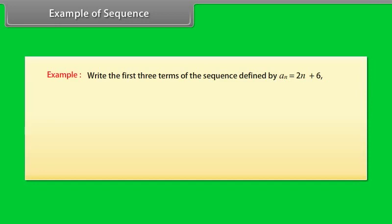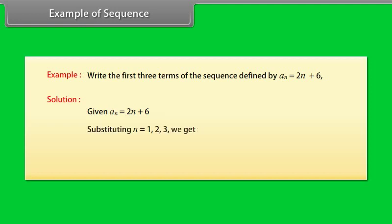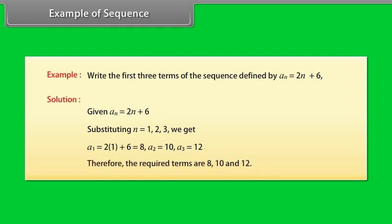Example of sequence: Write the first three terms of the sequence defined by a(n) = 2n + 6. Solution: Given a(n) = 2n + 6. Substituting n = 1, 2, 3 we get: a(1) = 2×1 + 6 = 8, a(2) = 10, a(3) = 12. Therefore the required terms are 8, 10, and 12.